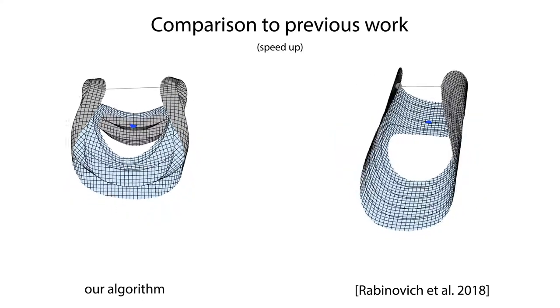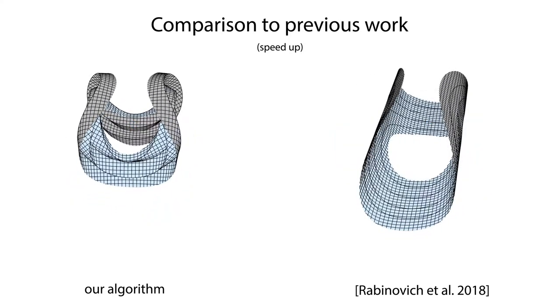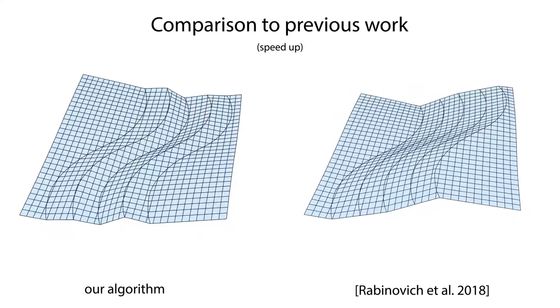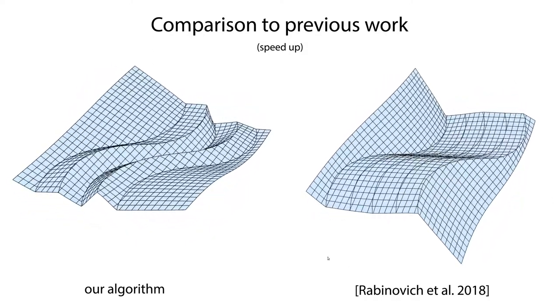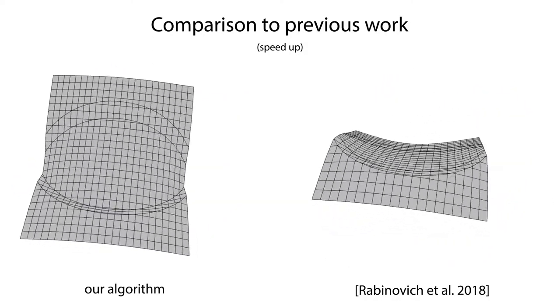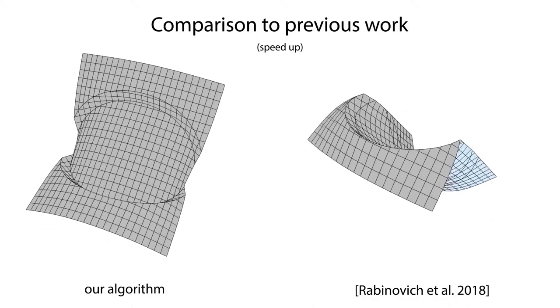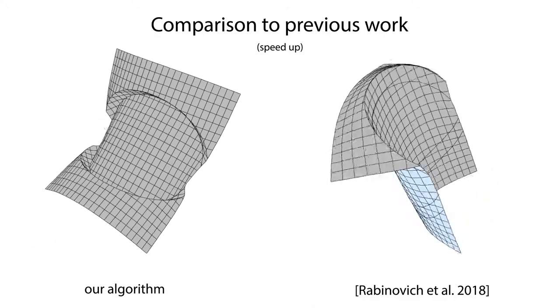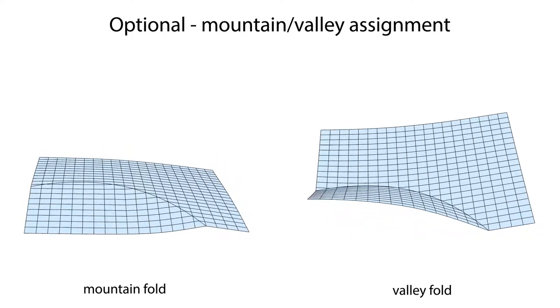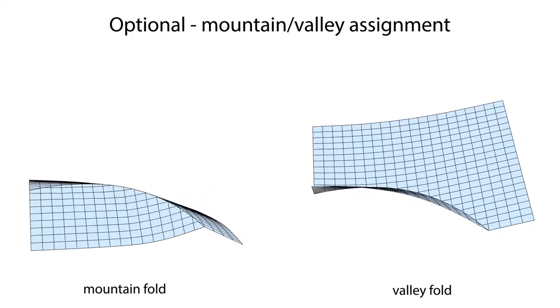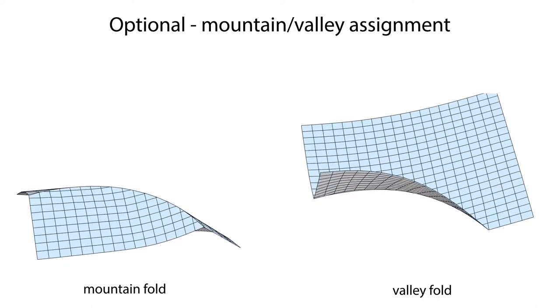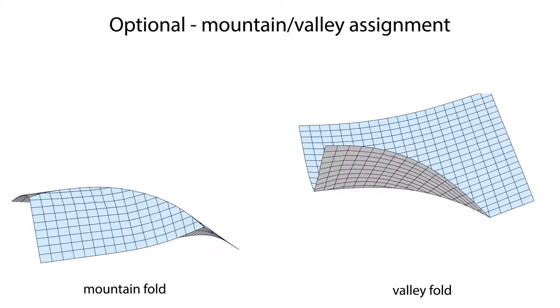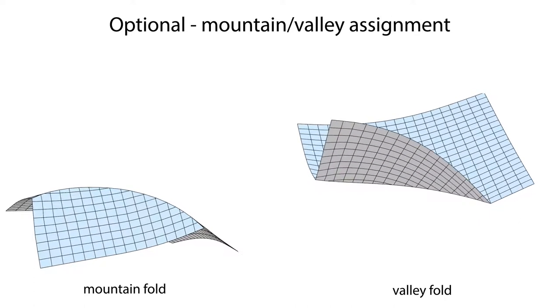Our algorithm does not require the user to specify any folding orientation and automatically finds a valid mountain valley assignment. Thus, our algorithm is suitable for freeform editing and exploration of new curved folded surfaces. Although not required for our method to work, we complement our algorithm with objectives to control dihedral angles and mountain valley assignments for additional artistic control if desired.